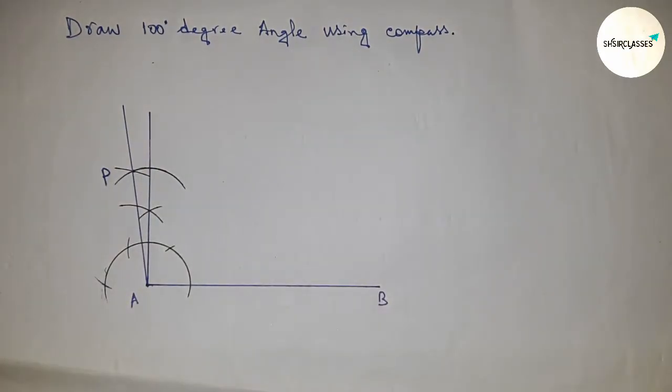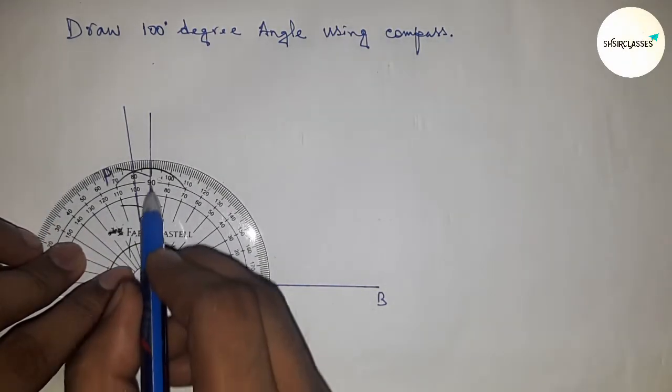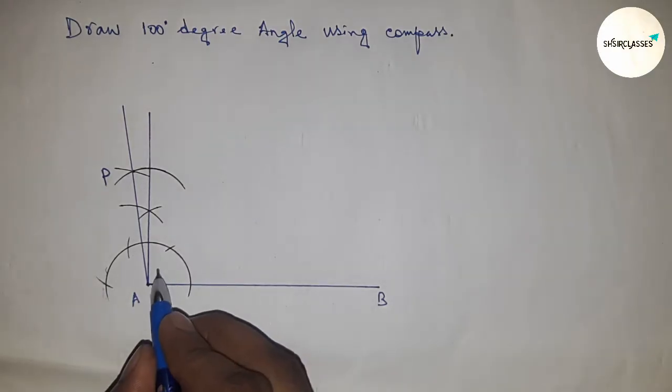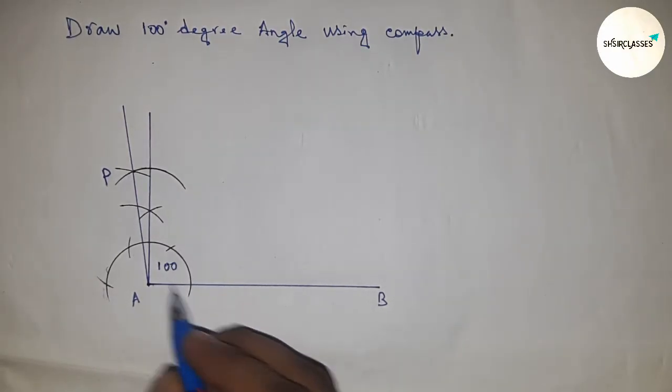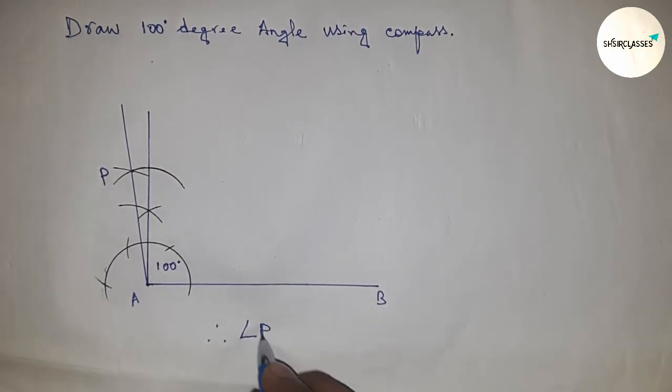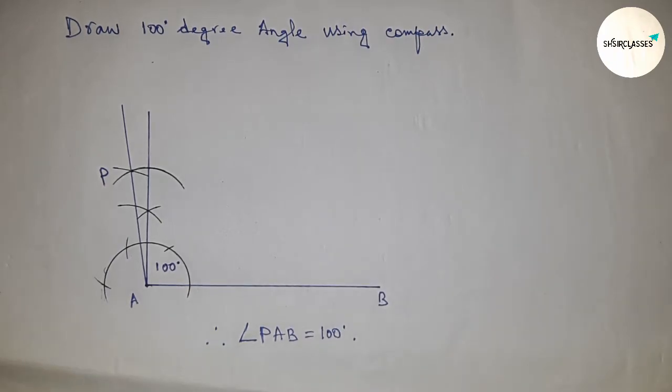So this is point P. So angle P A B is a 100 degree angle. So now checking whether it is 100 or not. So this is perfectly 100 degree angle. So this is a 100 degree angle.